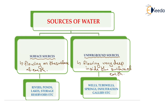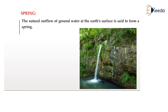No one had an idea about springs and infiltration galleries, so we will discuss each one of them. What is a spring? The natural outflow of groundwater at the earth's surface is said to form a spring. It means that if water is coming out of the surface of the earth by natural means, it is known as a spring, as shown in the diagram on screen where water comes out under natural forces.